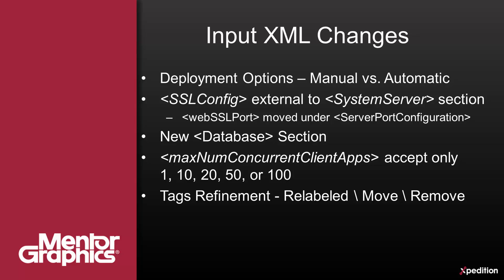We made the max-num concurrent client apps field accept only values 1, 10, 20, 50, or 100. Whatever value was previously set, we rounded up to the next allowed number — so 23 turned into 50, and anything above 100 turned into 100. As we introduce new configurations for higher counts, we will expand the settings. We also relabeled "num of client accessing system server" to "max-num concurrent client apps".